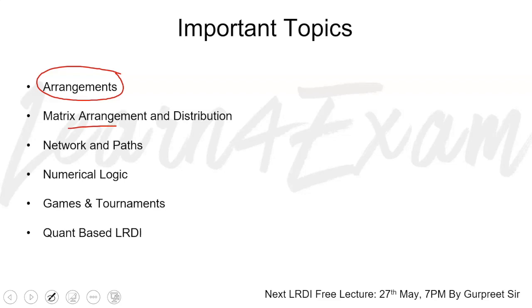The very important one, which I feel is most significant, is matrix arrangement and distribution. From this topic, you get a lot of questions. If we look at CAT 2017, 2018, and 2019 papers, you have questions from matrix arrangement and distribution.